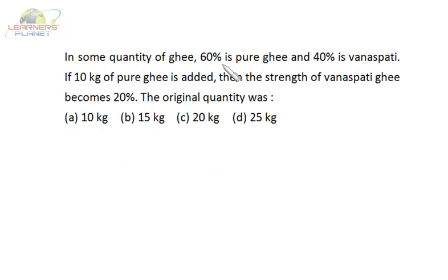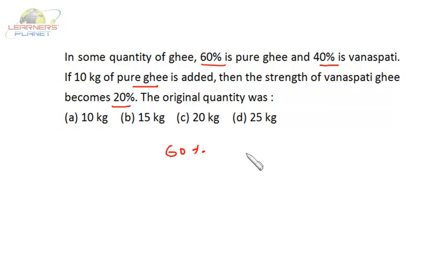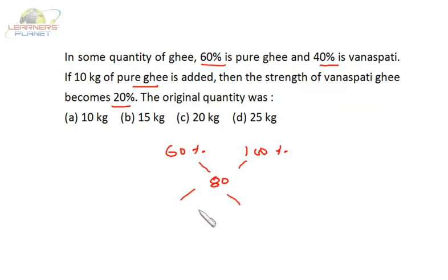In some quantity of ghee, 60% is pure ghee and 40% is vanaspati. If 10 kilograms of pure ghee is added, the vanaspati content becomes 20%, meaning 80% is pure ghee. Taking pure ghee into consideration: existing is 60%, added is 100%, final is 80%. The differences are both 20, giving a ratio of 1 is to 1. So if we are adding 10 kilograms of pure ghee, the initial quantity of ghee was also 10 kilograms.